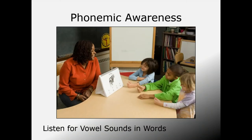Now we'll walk through the steps of the GATE program. The first activity promotes phonemic awareness—specifically the ability to recognize a featured sound in each word. Students listen for a vowel sound in levels 0.8 and 1.3, and for blends, digraphs, inflected endings, and compound two-syllable words in level 1.8. Phonemic awareness is developed as the teacher tells students the sound of the featured letters and asks them to repeat that sound.